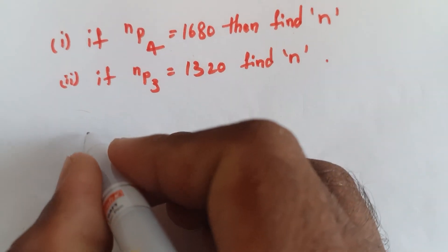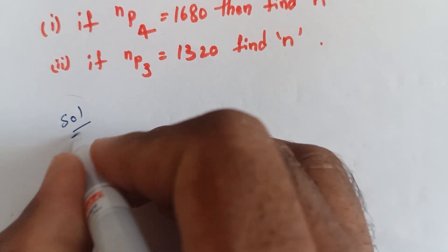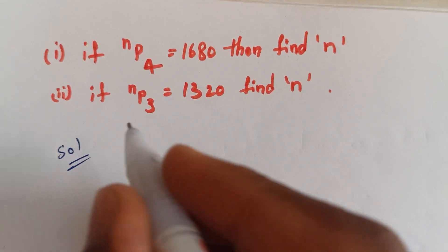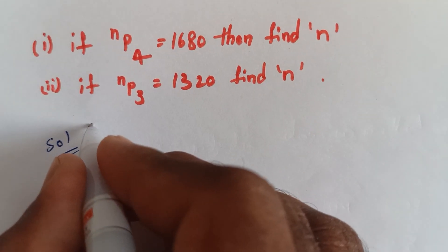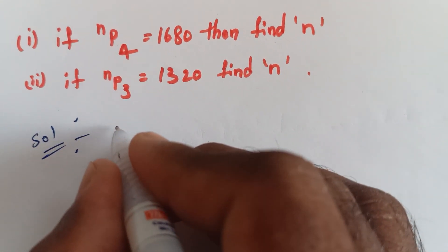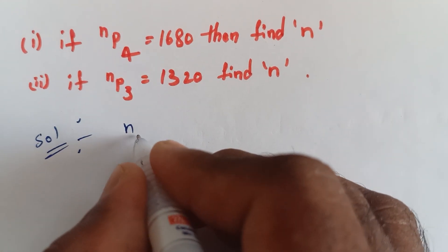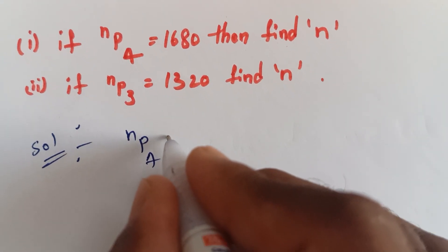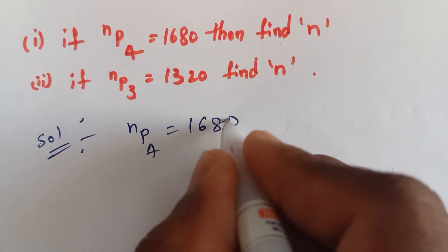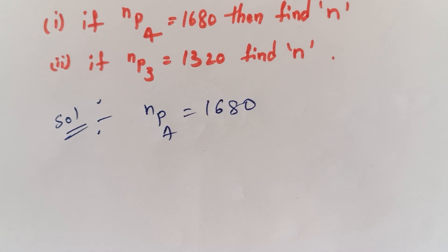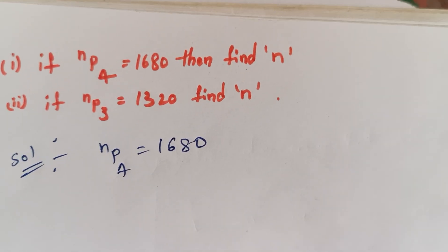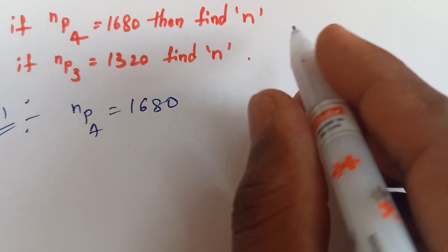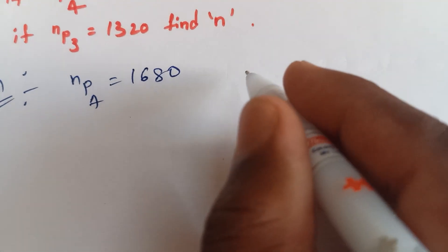So the solution is: the first question is, let's call it NP4. NP4 equals to 1680. We need to find the value of N.